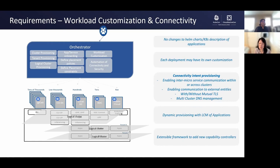Some microservices may require getting distributed to different clusters, and all these things need to be taken care of by the orchestrator. For example, there is an application which needs to be deployed on all the clusters with the label US-West and needs to be deployed on only one cluster with the label US-East. In the case where there is a choice of clusters, the orchestrator should be able to take a decision based on the best possible cluster to deploy the microservice.